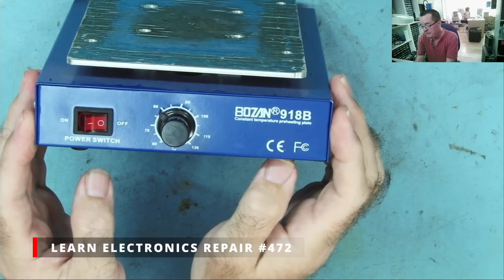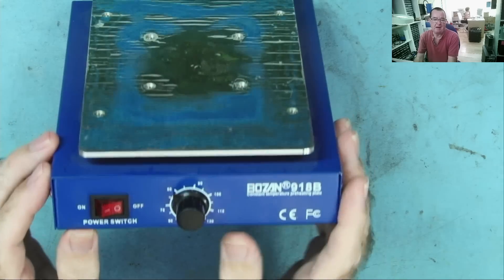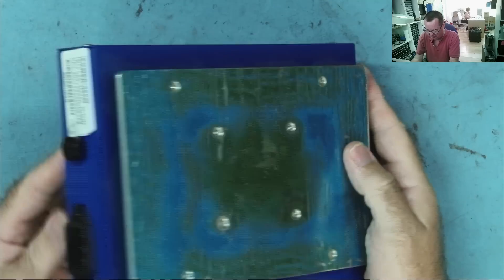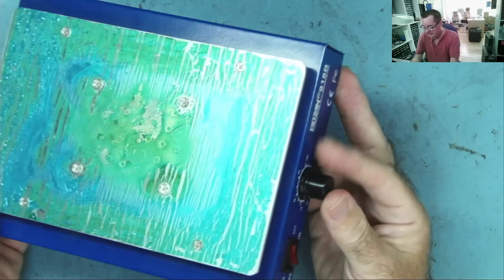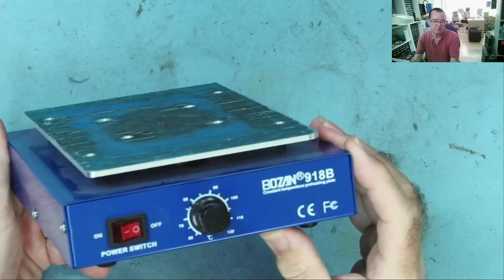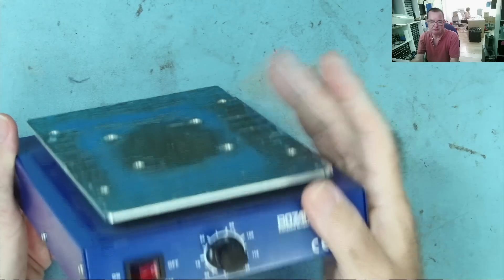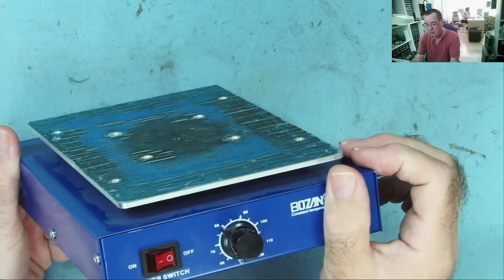Bozan 918B. This is from Handy Andy, who owns the local phone repair shop. He says he's had this for years. He used it obviously a lot when he's replacing screens on mobile phones.